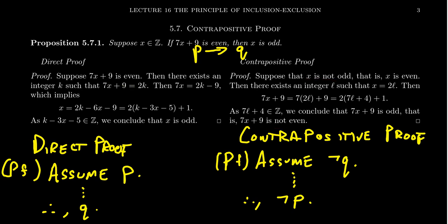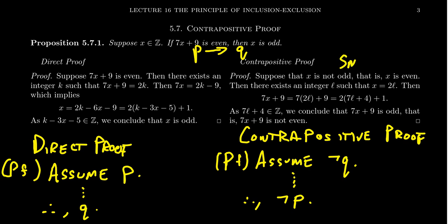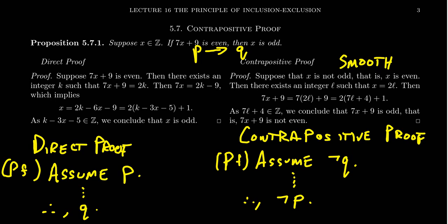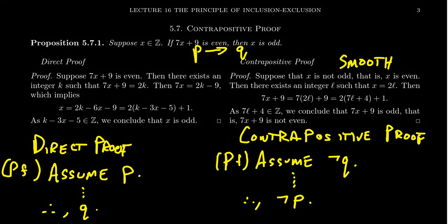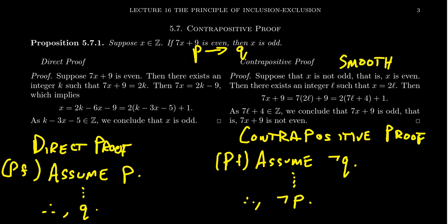When we proved it via contrapositive, we didn't have any of the annoyances or awkwardness that appeared in the direct proof. Looking at the proofs side by side, they're about the same length — both involving around five lines of writing. In terms of brevity, neither is shorter. But the contrapositive approach was definitely smoother — it avoided some of the awkwardness. Because of that, I would endorse the contrapositive as a method here. Sometimes the conditional itself can be awkward to prove, but its contrapositive might be much slicker or smoother.